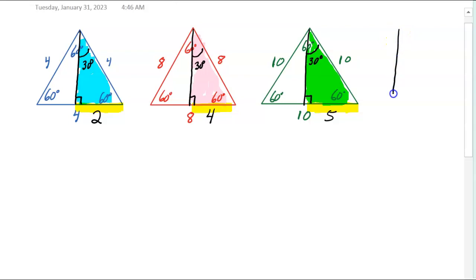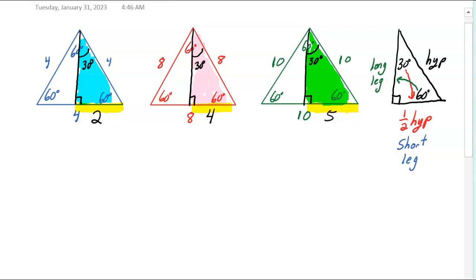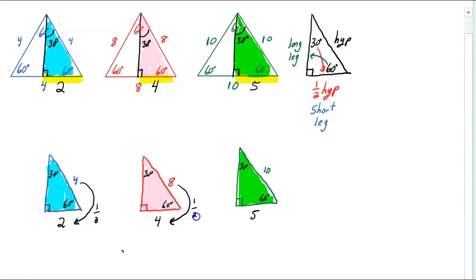That's worth noting. In a 30-60-90 triangle, if you know the hypotenuse, the side across from the 30 is half of the hypotenuse. That pattern always works. Some people call the side across from the 30-degree angle the short leg, and the side across from the 60 the long leg. So once you know the hypotenuse, you take half of the hypotenuse to get the short leg.